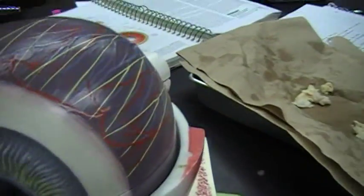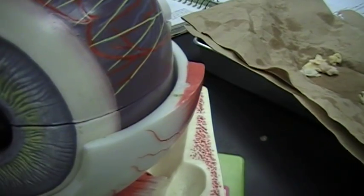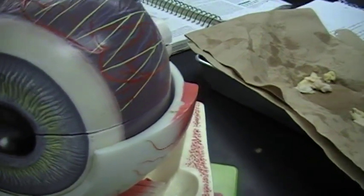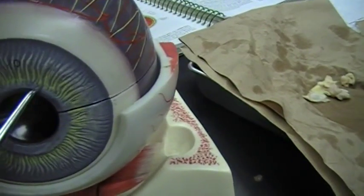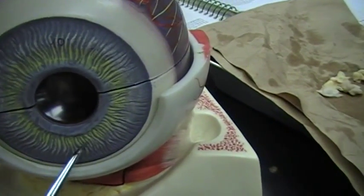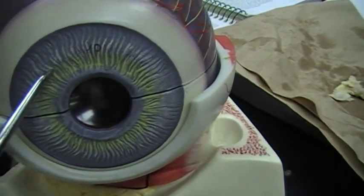The iris acts as a reflexively activated diaphragm to regulate the amount of light entering the eye. So, it is this going all around the oculomotor nerve.